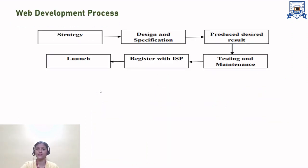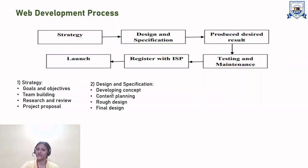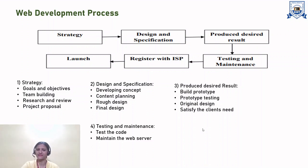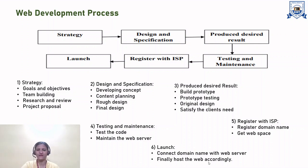The web development process includes several phases. In the strategy phase, you determine goals and objectives, do team building, and research and review the project proposal. In design and specification, it includes developing a concept, content planning, rough design, and final design. In the production phase, you build a prototype, do prototype testing, original design, and satisfy the client's needs. This is followed by testing and maintenance, which includes testing the code and maintaining the web server. Then, register with an ISP — register a domain name and get web space. Finally, the launch phase: connect the domain name with the web server and host the website accordingly.